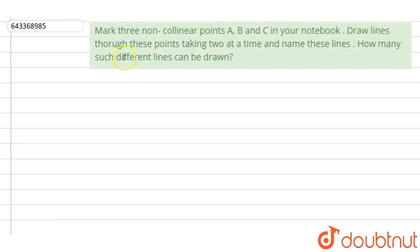Hi, let's start the question. The question says mark three non-collinear points A, B, C in your notebook. Draw lines through these points, taking two at a time, and name these lines. How many such different lines can be drawn?